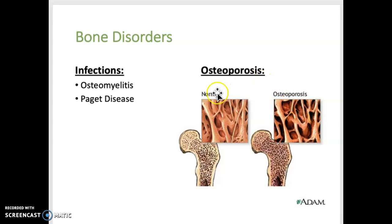Osteoporosis, shown in this picture, can be compared to normal bone tissue to see the difference. This is when there's decreased bone mass and density, resulting in thin, fragile bones that are susceptible to fractures. Causes include increased age, being postmenopausal with decreased estrogen, decreased mobility, smoking, and calcium or vitamin D deficiency.